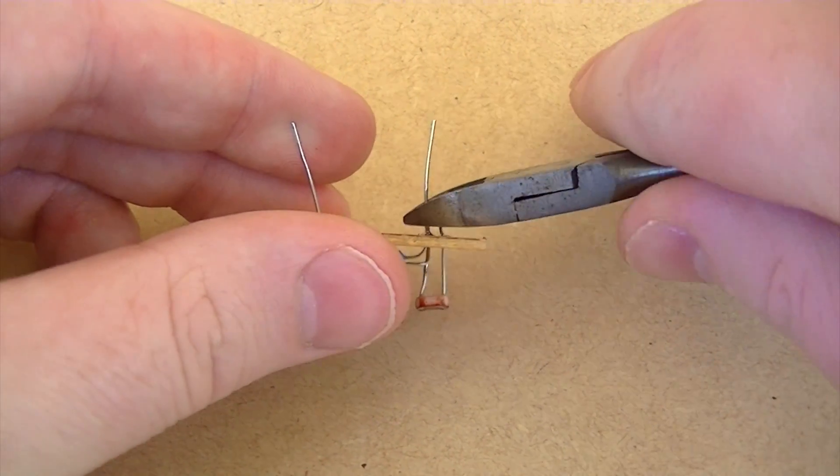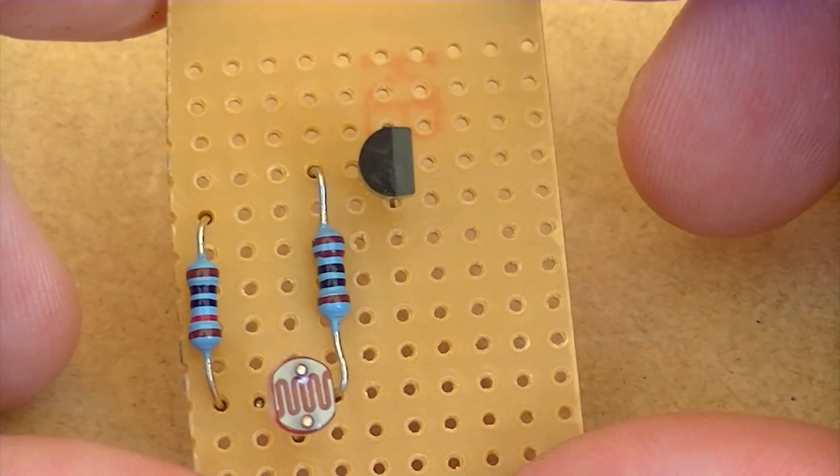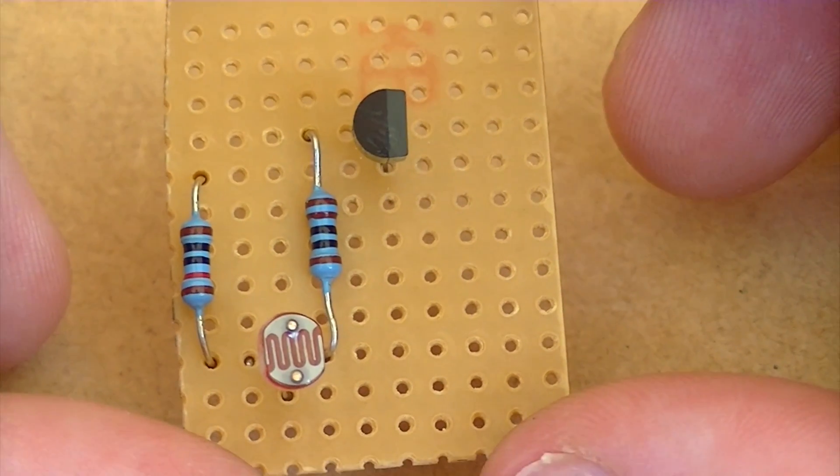Trimming the component legs as we go. Next insert the NPN BC548 transistor like so.